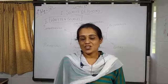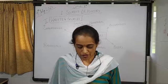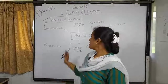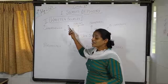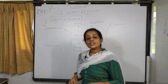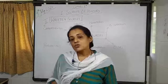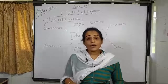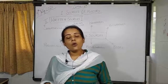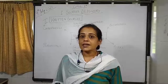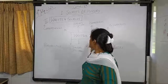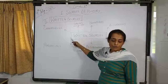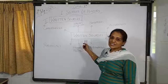Hello students. Today we will start with the second part of our first chapter, sources of history. Last time we saw material sources. Today we will see about the written sources. You can refer to page number 2 in your textbook, where a diagram shows all the aspects of the written sources of modern history.